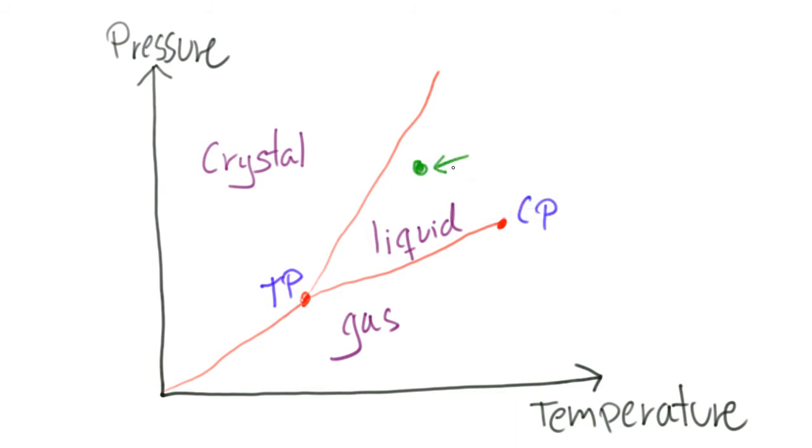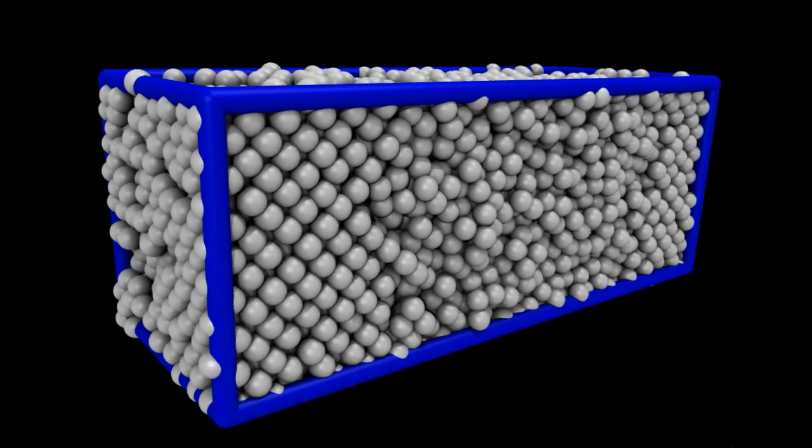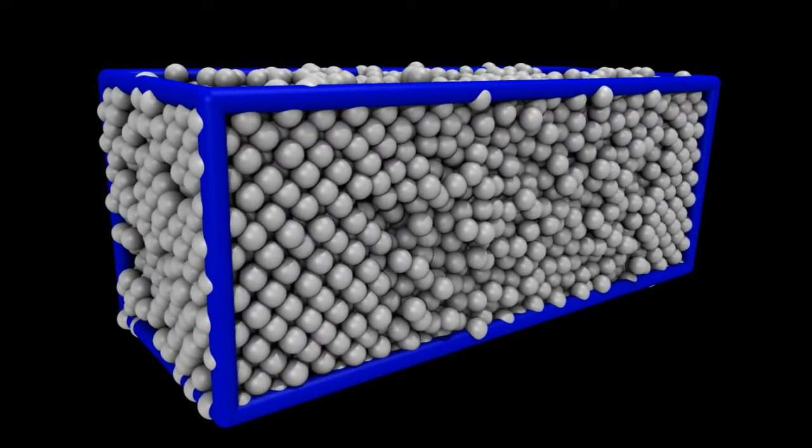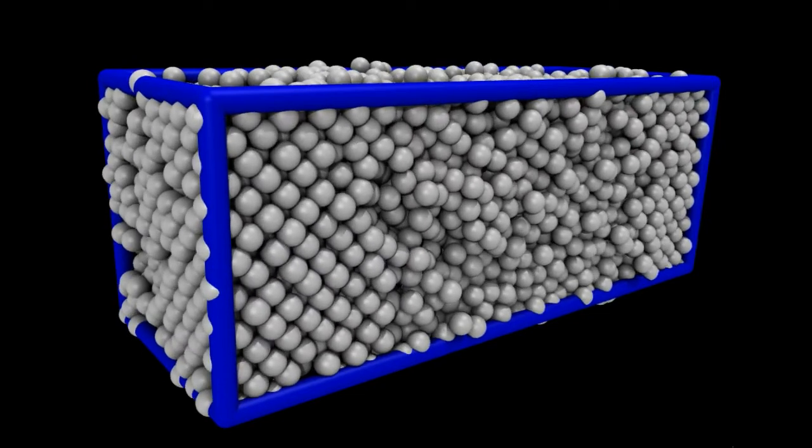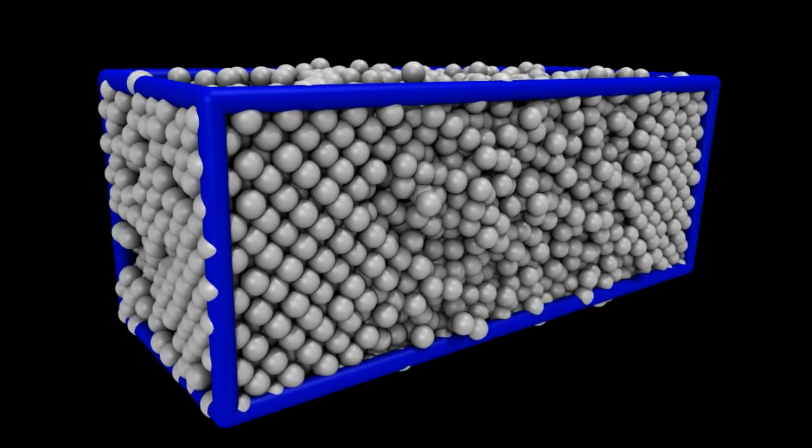Assume that the two-phase simulation is done at a temperature and a pressure where the liquid is thermodynamically stable while the crystal is metastable. Then the crystal would melt, the interfaces would move towards each other and finally the entire system would end up in the liquid state.